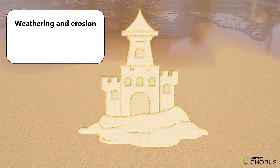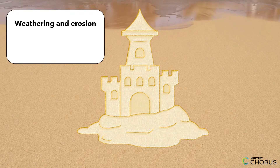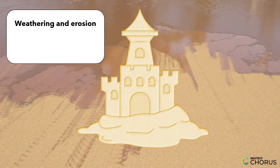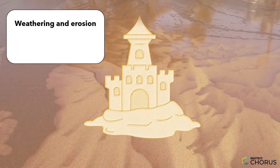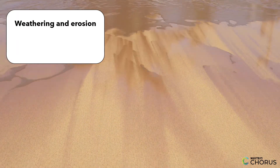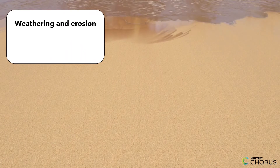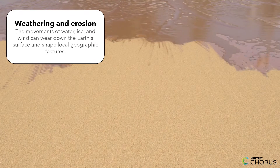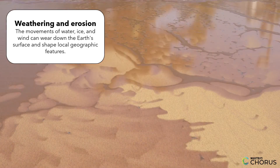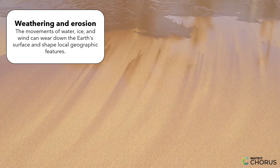Another way the Earth's surface can change is through weathering and erosion. Imagine you've built a sandcastle at the beach and the waves keep crashing against it. Over time, the waves will erode the sandcastle, and it will become smaller and smaller. This is similar to how the movements of water, ice, and wind can wear down the Earth's surface and shape local geographic features.